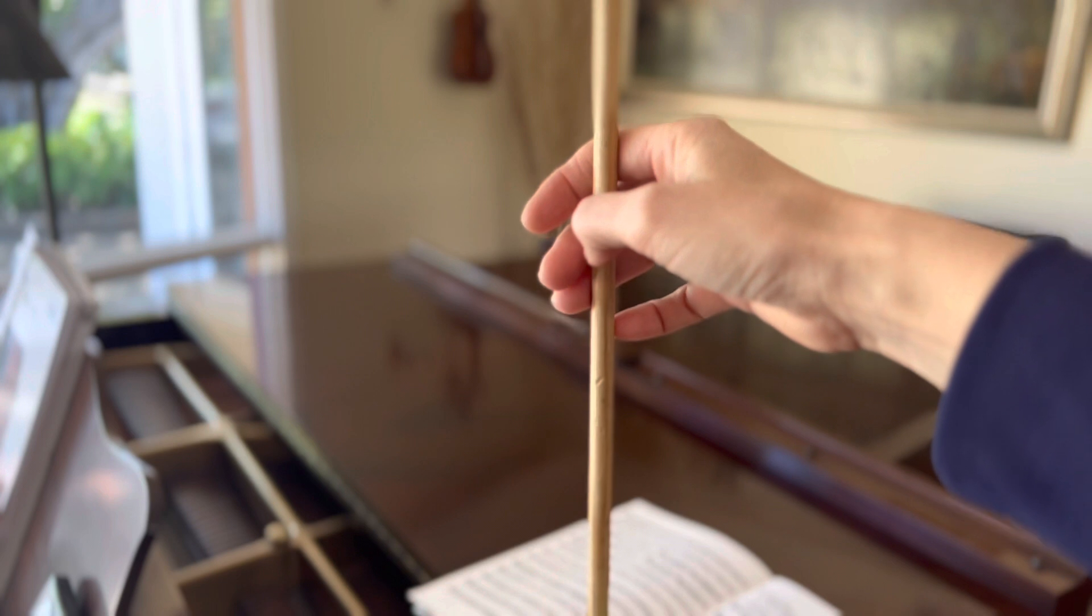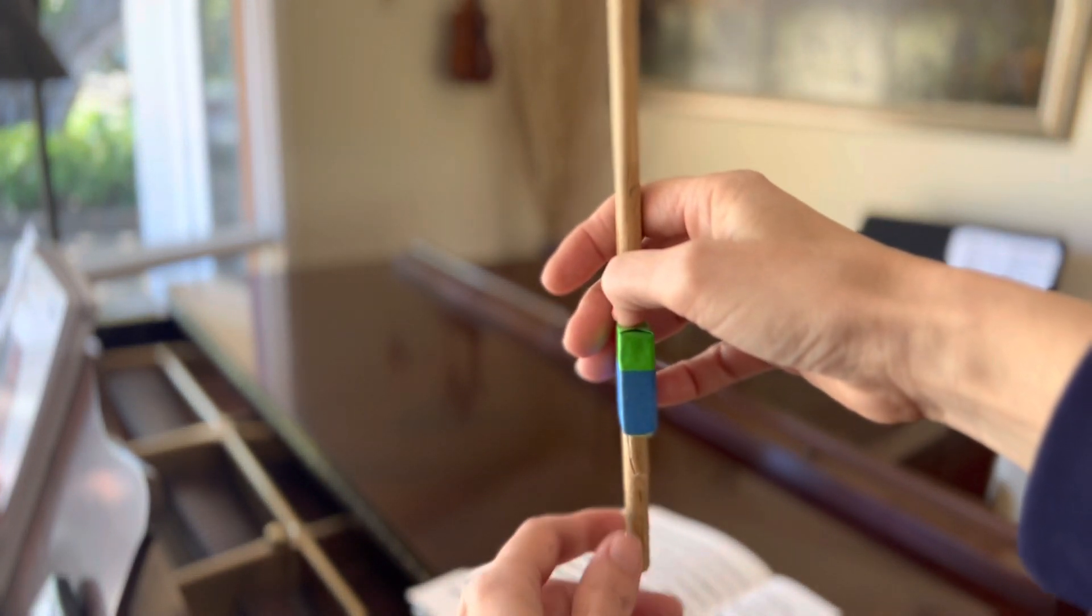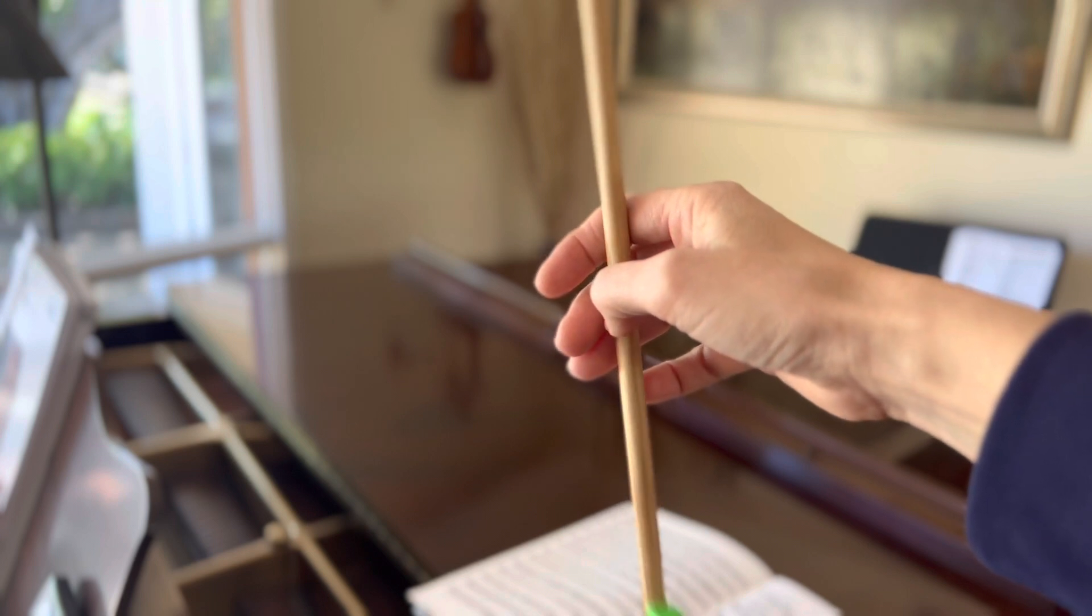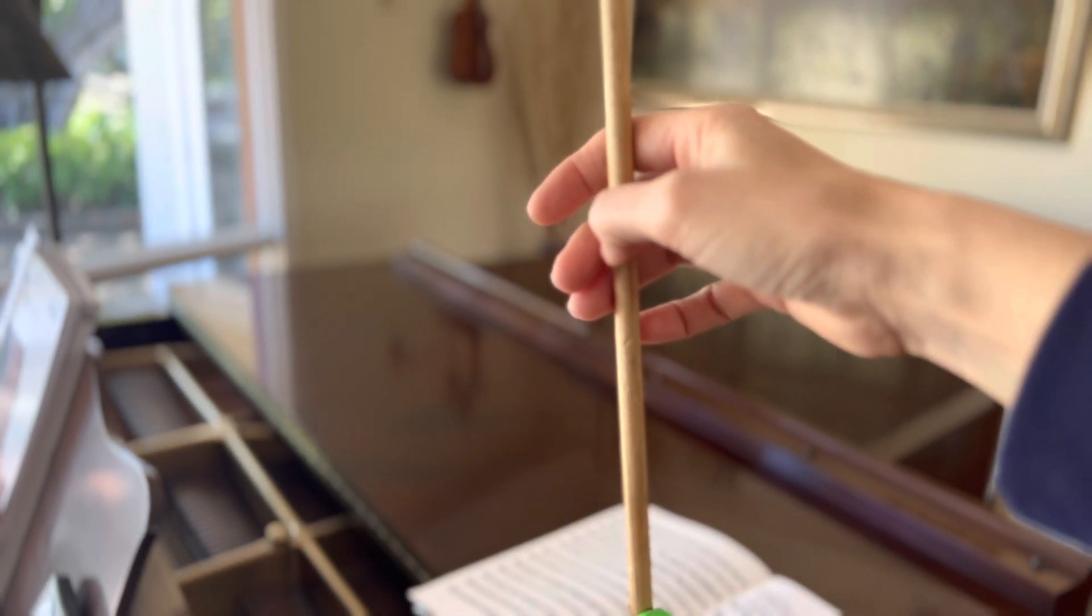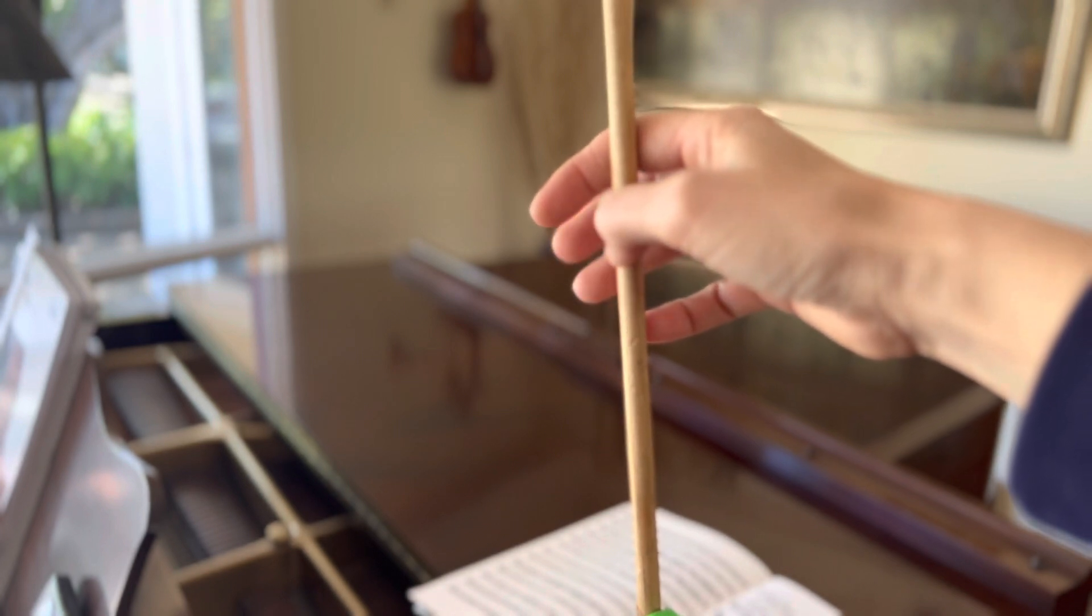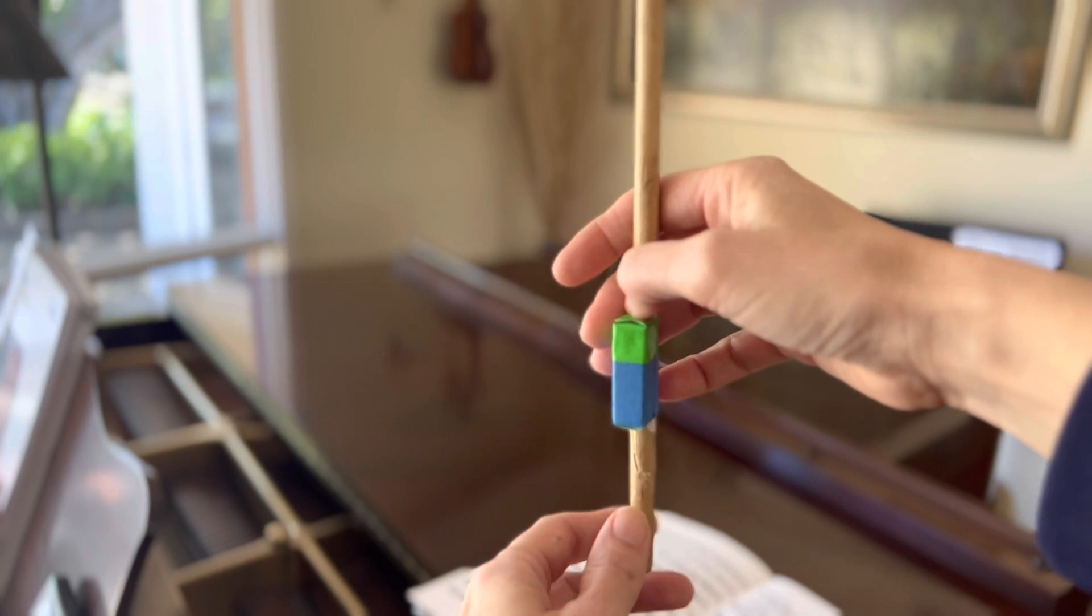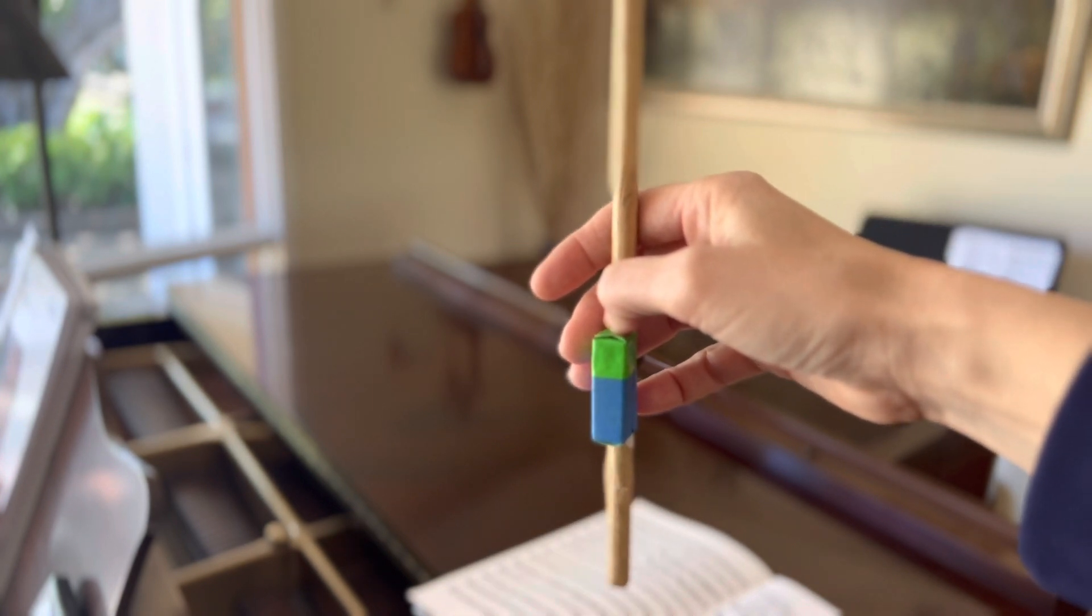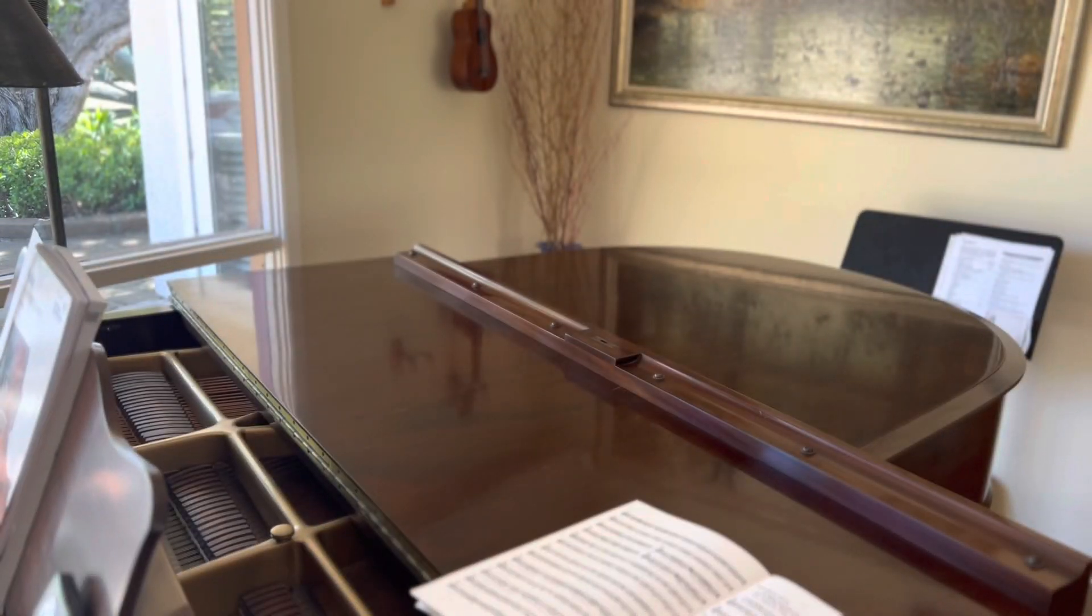can stop the bow by pressing the thumb into the stick a little bit against the pinky finger. So you can't really see it. My hand stays very relaxed. You can't really see the tension changing in my hand because it's very slight.